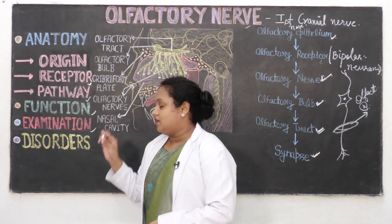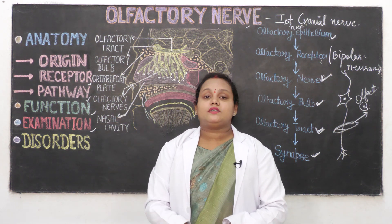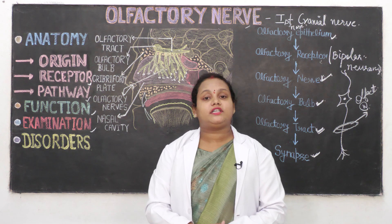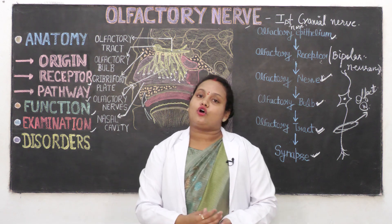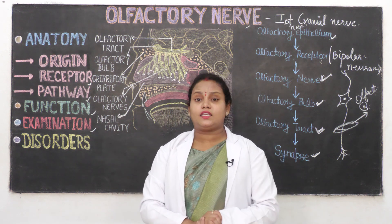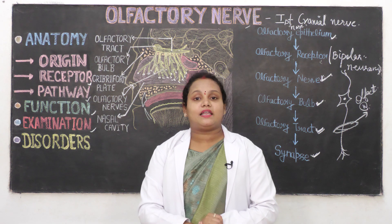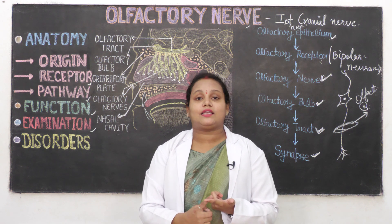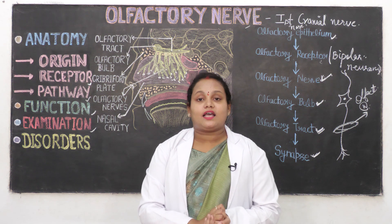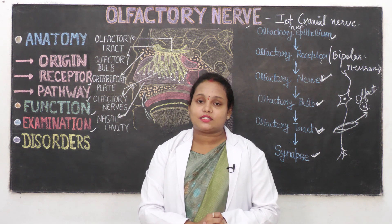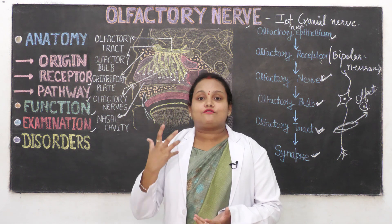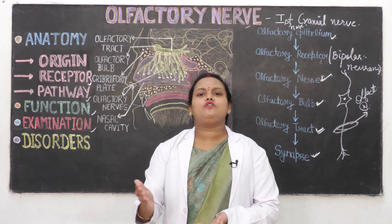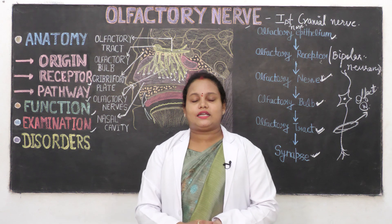Next, examination. How will you examine whether a patient's olfactory nerve is intact? The common method is to use any common non-irritating smell — for example, vanilla, coffee, clove oil, asafoetida (hing), any fragrant talc, or any common soap. You need to use any such common non-irritating smell.